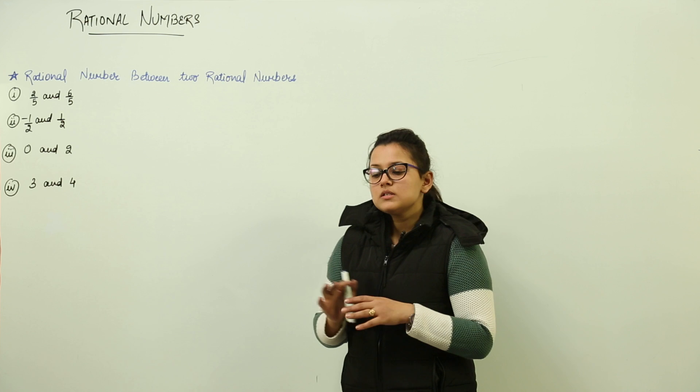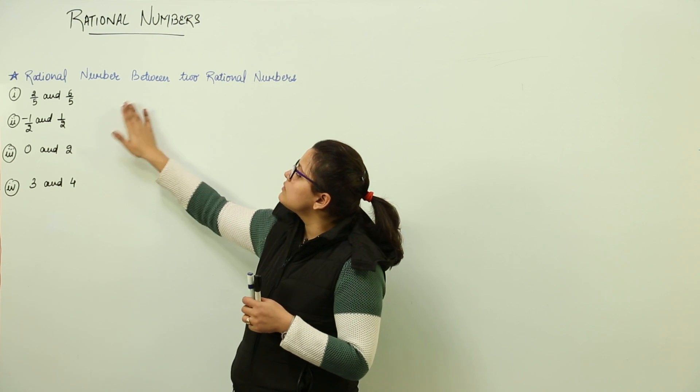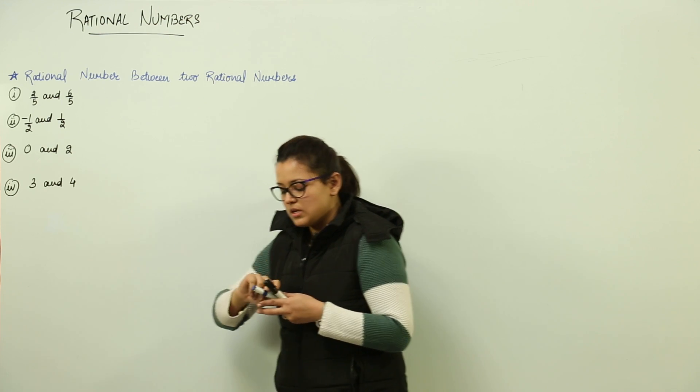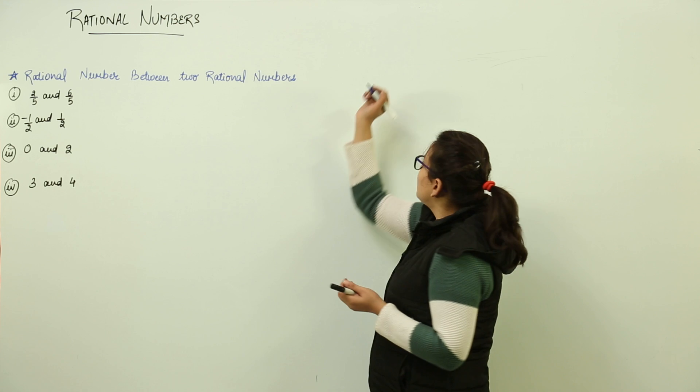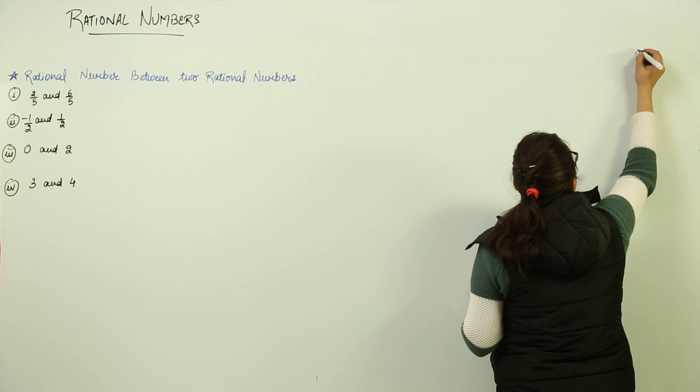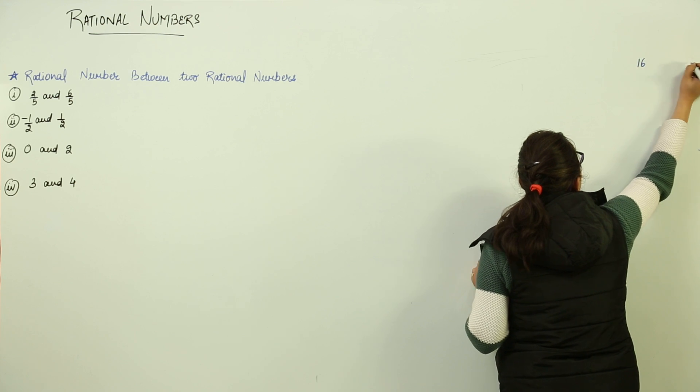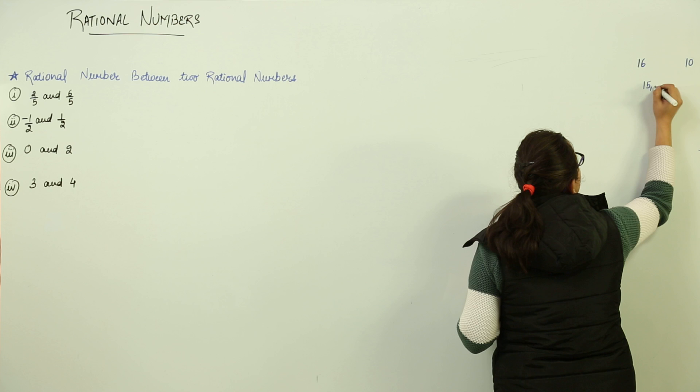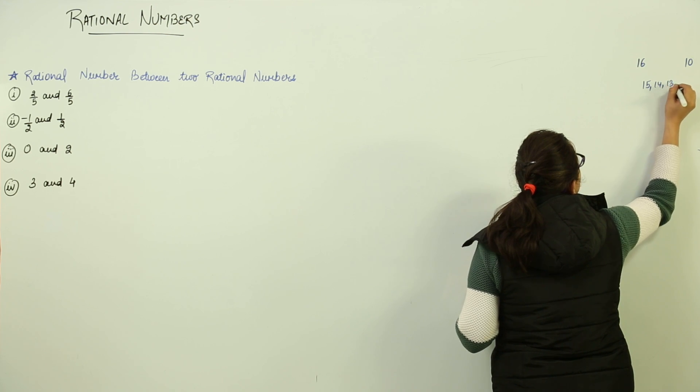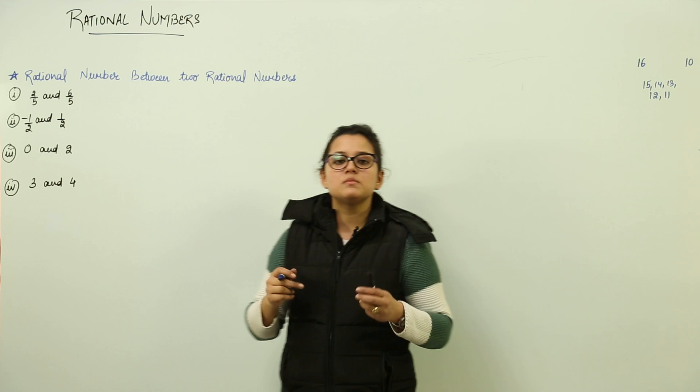Now the question, another question that can come from this chapter is write the rational number between the two rational numbers. Before starting with this, if I ask you a question, what numbers are present between 16 and 10? You can tell me directly 15, 14, 13, 12 and 11. These are the numbers present between the two numbers.